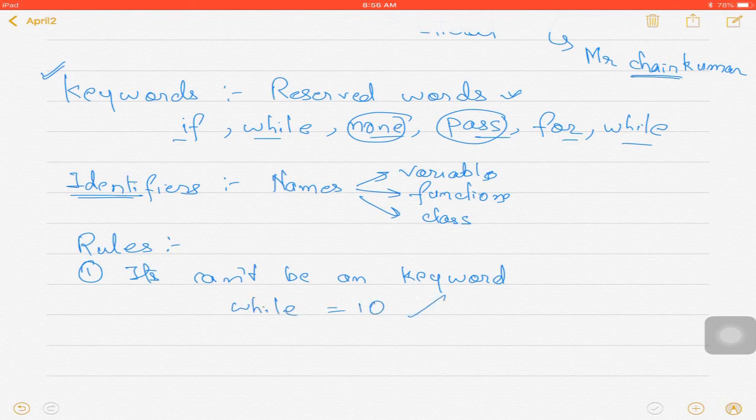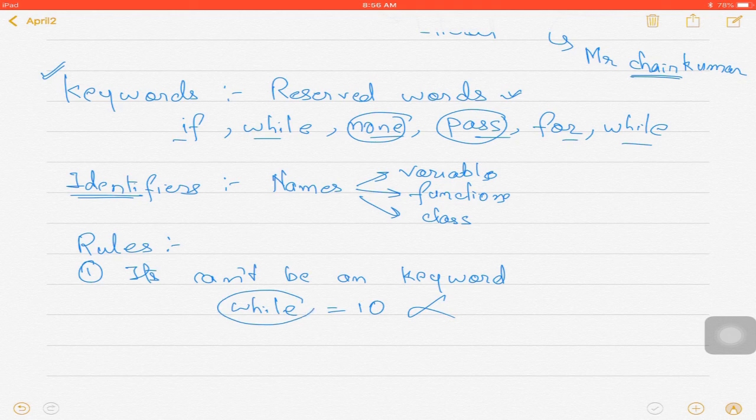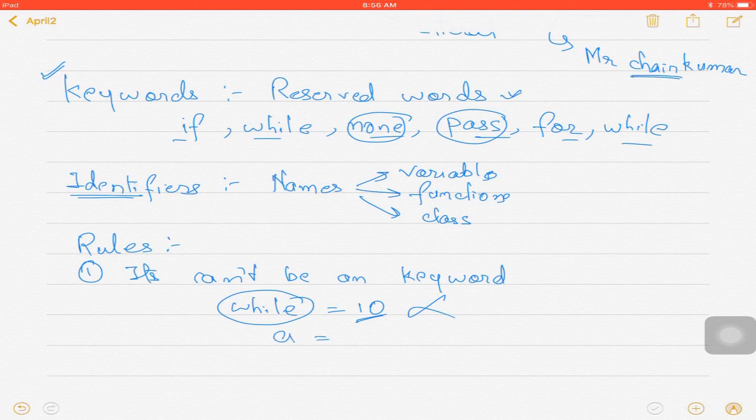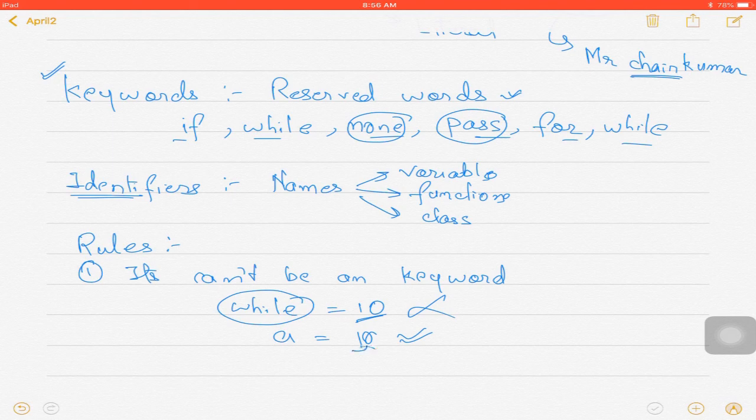But I can use 'a is equal to 10'—this is possible. Here we are identifying this particular value 10 with a. This is doable. Again, we have to remember that keywords cannot be used as an identifier.